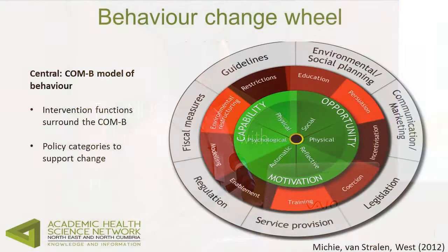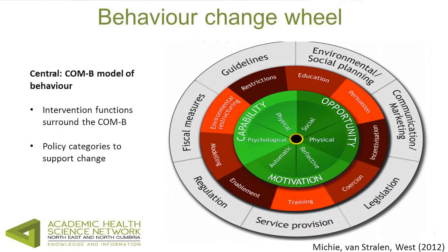The framework is visualized as a wheel where the green, red, and gray layers are meant to spin rather than be static. If we identify barriers categorized within capability, opportunity, or motivation, there may be particular intervention types — the red layer — better suited to address those barriers. Surrounding that, there may be particular policy levers supporting the delivery of that intervention. What's innovative is that it pulls those three levels together.